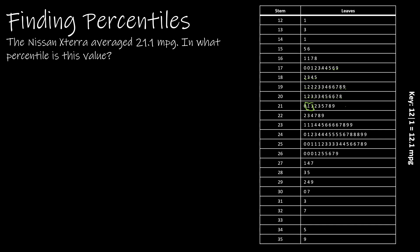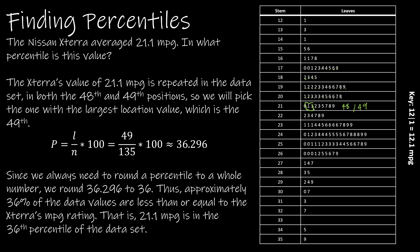After counting through the data, I find the 48th and 49th positions. Now we're going to pick the one with the largest location value, which is obviously 49. That's the number I'm going to use in my equation. So P, which is the percentile that we're trying to find, is location, which is 49, divided by n, which is still 135, times 100. That gives me 36.296, and we're just going to round that to a whole number, which is 36. So what does that mean? Approximately 36 percent of the data values are less than or equal to the Xterra's miles per gallon rating, or that 21.1 is in the 36th percentile of the data set.